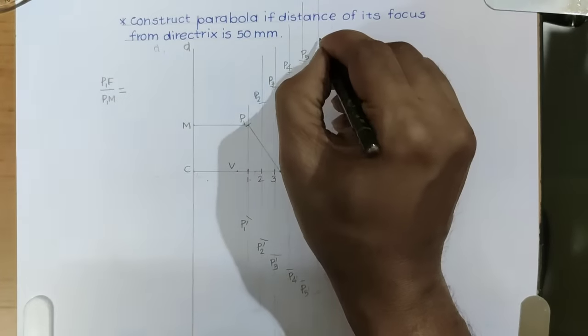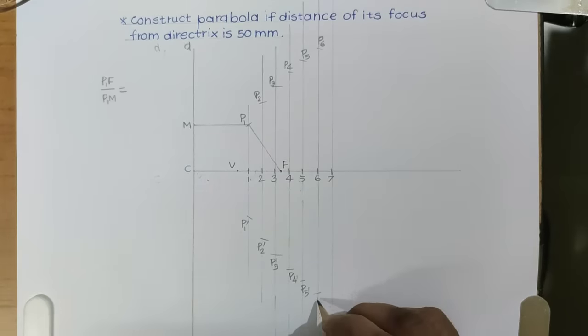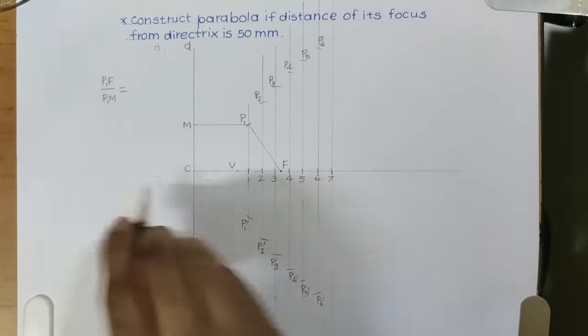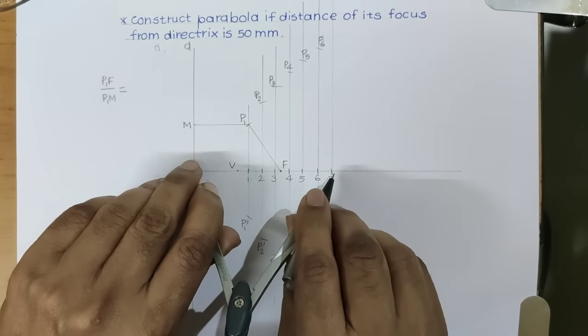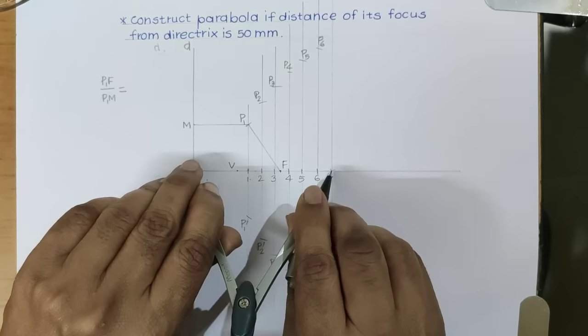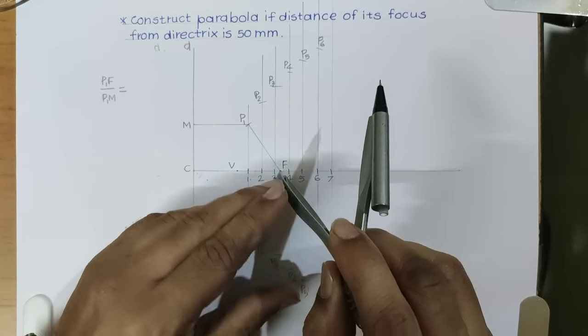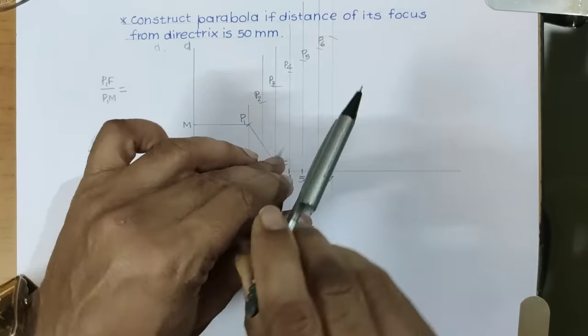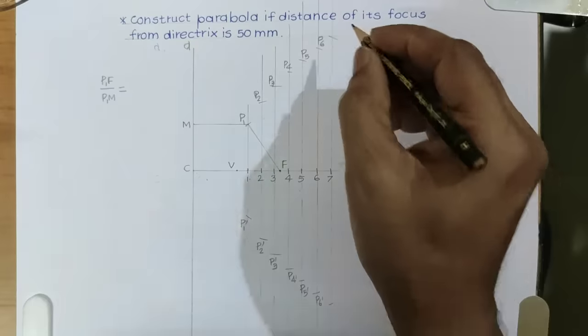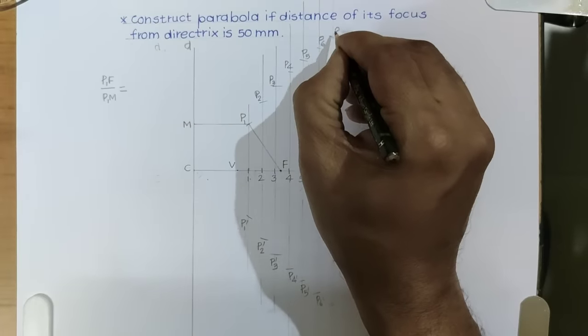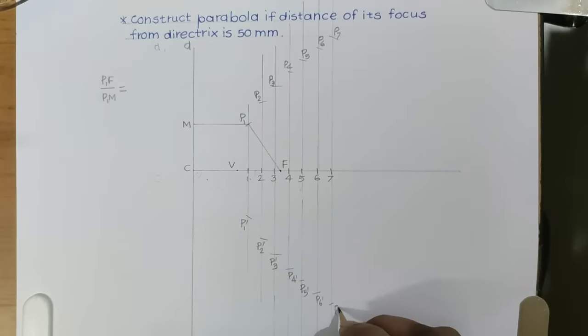It will give two more points, P6 and P6 dash. Then, finally, C7, take focus as center, cut seventh line on both sides. We get two more points, which will lie on parabola.